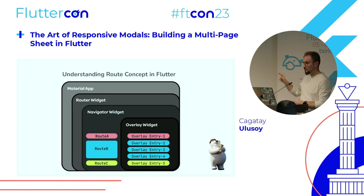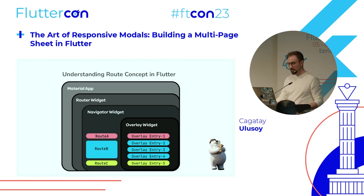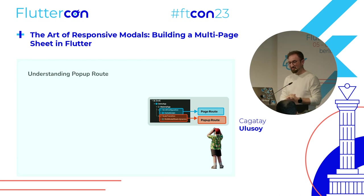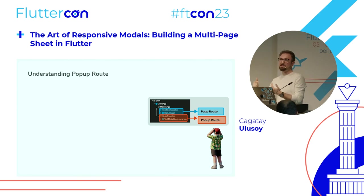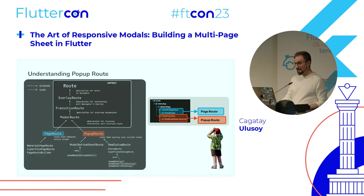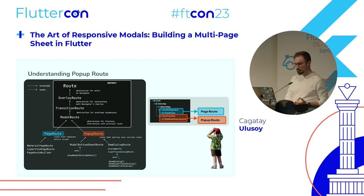The Navigator widget has an Overlay widget which provides an independent layer on top of other widgets and can be used to display visual overlays. Routes use overlay entries to represent each screen on the overlay stack. Although modal sheets overlay on the originating screen and you still see the originating screen, many people are confused because they forget they are dealing with a route pushed to the navigation stack. They want to access ancestors of the originating widget but can't, because it's a different overlay entry and a different route.